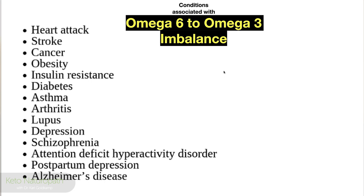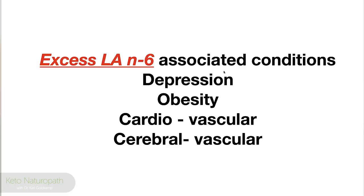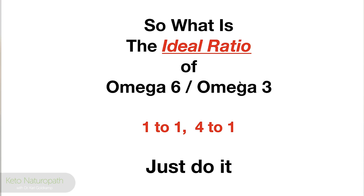The disinformation still continues today as if nothing happened. Excess linoleic acid — excess omega-6 — is associated with depression, obesity, cardiovascular diseases, and cerebrovascular diseases. Fish oil, EPA, and DHA deficiency — which you can measure — is associated with obesity, depression, dementia, Alzheimer's, MS, and chronic inflammatory conditions of pretty much any disorder. The ideal ratio of omega-6 to omega-3 is 1:1 to 4:1. Stay under 4:1. Measure it. Figure it out. Do it — it's not that difficult.